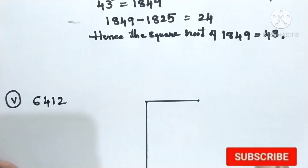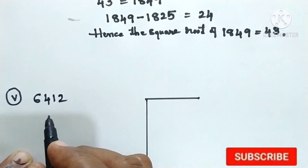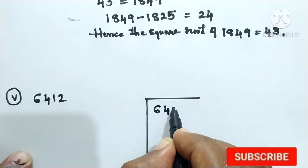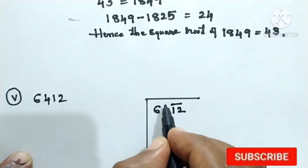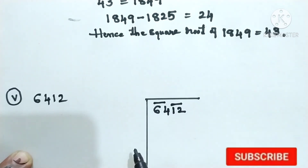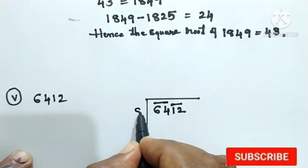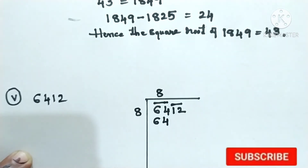Question number 5: 6412. Now make groups starting from the right-hand side. Two digits form the first group, and the next two digits form the second group. Here, the second group is 64, and 8 eights is 64.